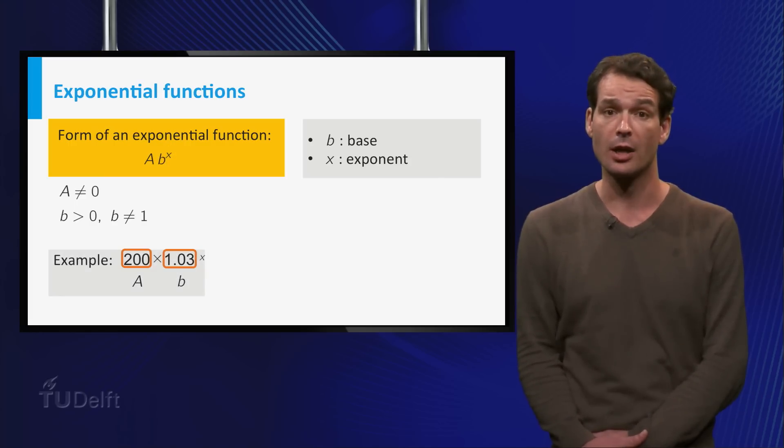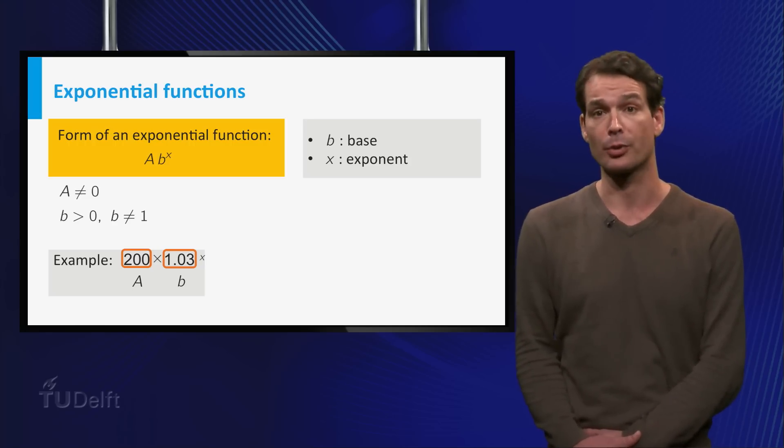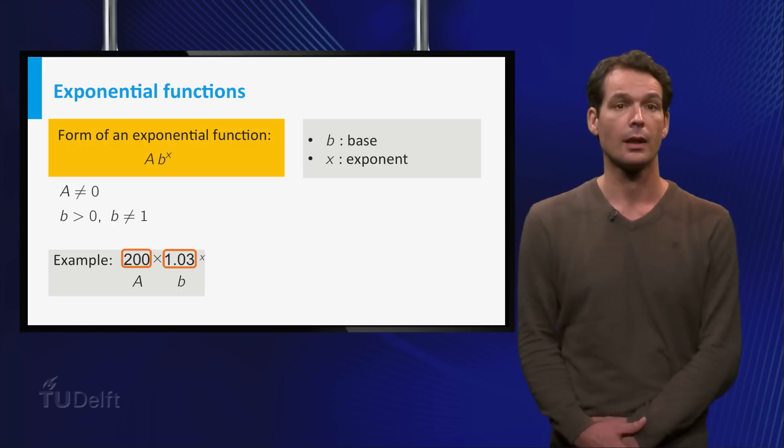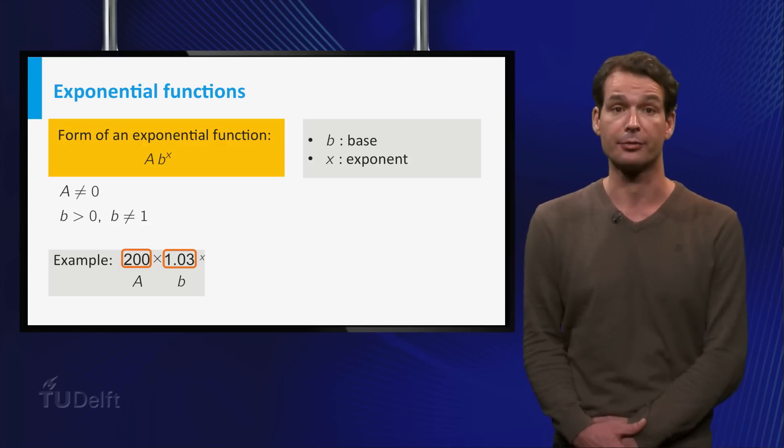The function we found in the example is indeed of this form: 200 times 1.03 to the power x, so a equals 200 and b equals 1.03. In the example, x is a natural number because you only receive the interest on your money once a year. In general, we would like to define b to the power x for any real number x.